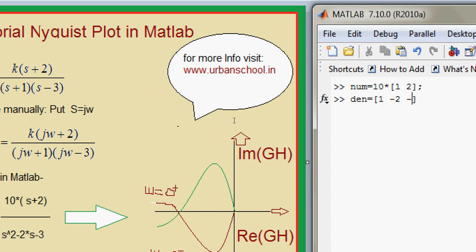And the denominator with coefficients 1, -2, and -3. Now take another variable GH which will represent your transfer function, which is num comma denominator.